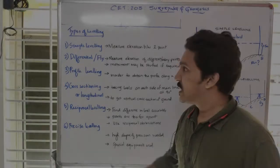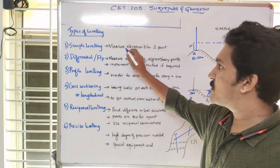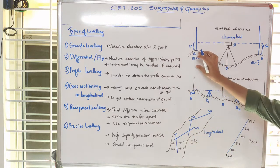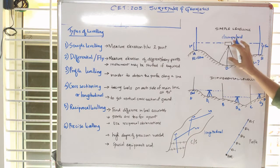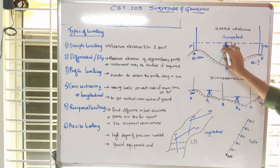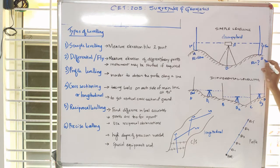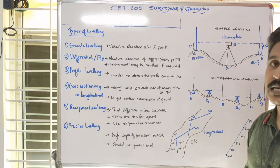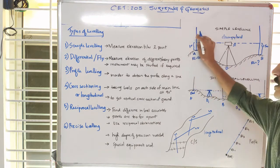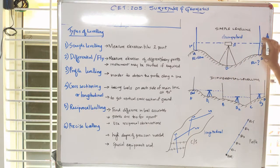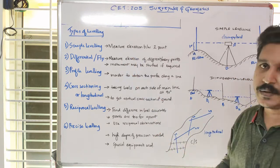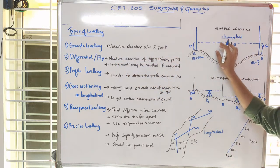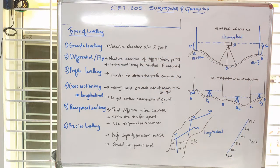Simple leveling is the measurement of elevation between two points. We have two points, A and B. We keep a dumpy level in between and measure these two points to find the elevation using equations. We measure point A using a leveling staff, then point B using the same leveling staff. Simple leveling involves one instrument and maybe one or two leveling staffs.